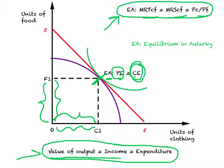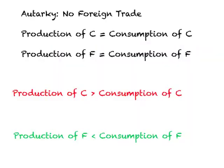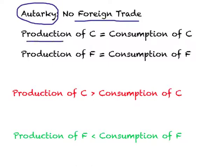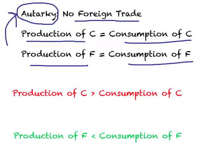EA stands for equilibrium in autarchy. Autarchy means a situation of no foreign trade. When the country is self-sufficient and engages in no foreign trade, production of a particular good equals consumption of that good — as we see with clothing and food. Value of output, income, and expenditure are all equal to one another in autarchy.